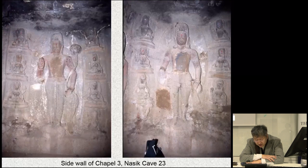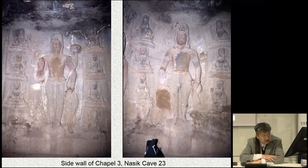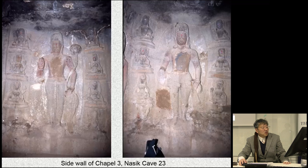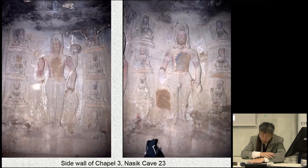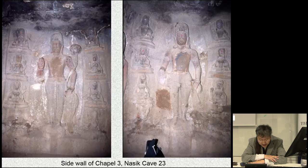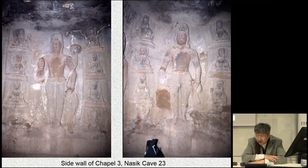It is worth noting that Avalokiteshvara and Vajrapani are arranged in the center of the two side walls. On both sides of the main deity, eight small attendants are arranged in four registers. The lower registers have collapsed, but originally eight attendants flanked Avalokiteshvara and Vajrapani. At this stage it is difficult to identify each small attendant, but it is natural to suppose that attendants of the Lotus family centered on Avalokiteshvara and those of the Vajra family centered on Vajrapani were collectively arranged here.